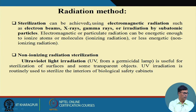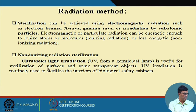Sterilization by radiation can be achieved by electromagnetic radiation such as electron beams, X-rays, or gamma rays, or by irradiation of subatomic particles. Electromagnetic or particulate radiation can be energetic enough to ionize atoms or molecules. Non-ionizing radiation like UV rays is useful to sterilize surfaces. UV radiation is routinely used to sterilize the interior of biological safety cabinets. In operation theatres and in the biochemical industry, we also use UV rays for surface sterilization, for example inside laminar flow chambers where we prepare our cultures.